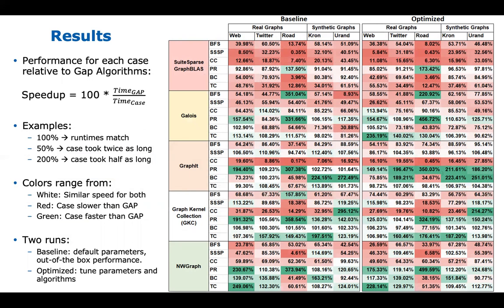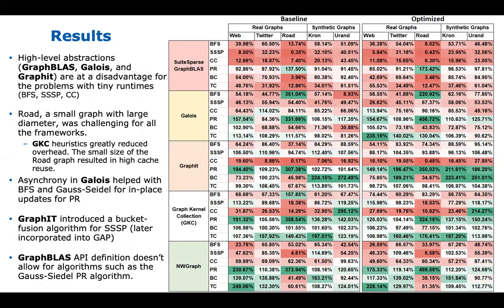For high-level abstractions — GraphBLAS, Galois, and GraphIt — there was a deficit on short-running benchmarks like BFS, SSSP, and Connected Components because the abstraction penalty outweighs the work done. The road graph was tough for everyone due to its large diameter. GKC had heuristics that reduced overhead and took advantage of the graph's small size for cache reuse. Galois did interesting things for BFS and PageRank with asynchrony, making a big difference especially with their Gauss-Seidel algorithm.